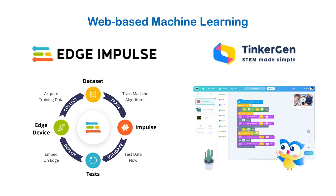We're going to use two different web-based machine learning platforms. Initially I'll talk about Edge Impulse — how we can collect data from the device, train the neural network, and deploy it. Once we're done with that, we'll go for a simpler approach using TinkerGen, which is a graphical way of doing what we're doing with Edge Impulse and makes our life easier. Once we develop these machine learning algorithms from either of these methods, we deploy them on this microcontroller. The whole machine learning is actually working on the microcontroller.